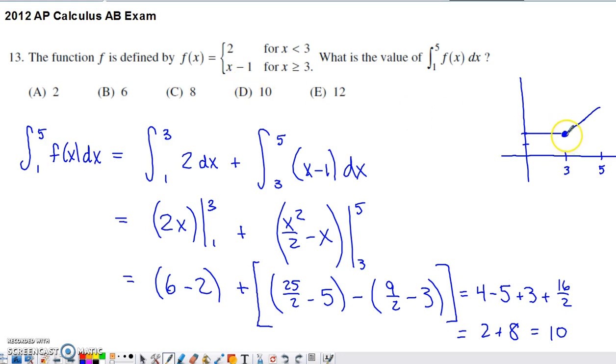So this graph picks up at 3 comma 2. What's kind of nice about this situation is that the closed circle where the second piece of the function picks up fills in the open circle where the first piece of the function leaves off.